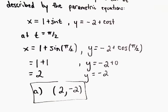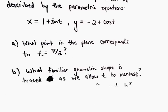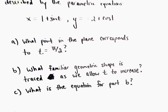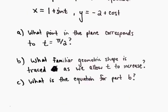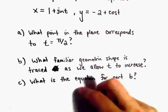So, all right, easy enough. Just a matter of a plug and chug. Part B says what familiar geometric shape is traced out as we allow t to increase.